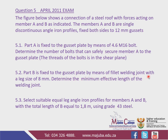It reads: Part B is fixed to the gusset plate by means of a fillet welding joint with a leg size of 8 millimeters. Determine the minimum effective length of the welding joint. Take note of the leg size which is 8 millimeters. Also, from 5.3, take note that the grade of the steel for A and B is grade 43 — it's only written there but it's important for 5.2 as well.